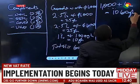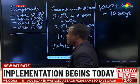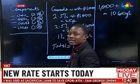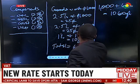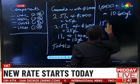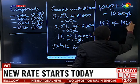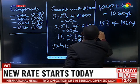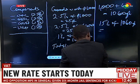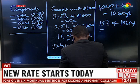Now this 1,060 cedis is the figure on which you apply the standard rate. The standard rate, which has been increased from 12.5% to 15%, will be applied on 1,060 cedis. So when you do that, you would have 15% of 1,060 Ghana cedis. Let's just do the quick math: 15% over 100 multiplied by 1,060.